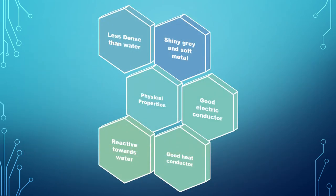Next let's have a look at some of the physical properties of these alkali metal elements. Alkali metal elements are shiny, grey and soft metal.